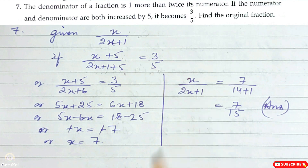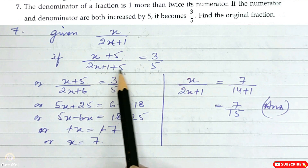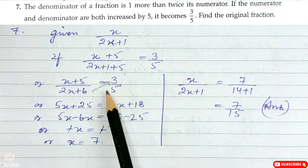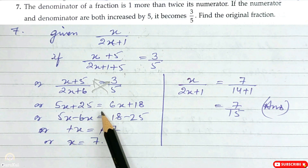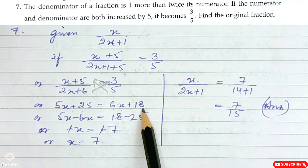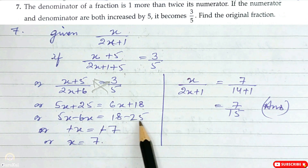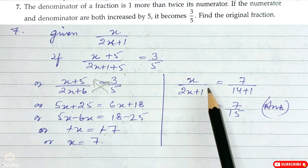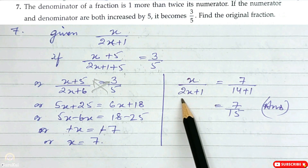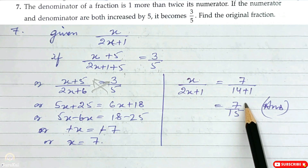We have the equation: (x plus 5) over (2x plus 6) is equal to 3/5. Cross multiply: 5(x plus 5) is equal to 3(2x plus 6), so 5x plus 25 is equal to 6x plus 18. Bringing x to the left: 5x minus 6x gives minus x, and 18 minus 25 is minus 7; both negatives cancel, so x is 7. The original fraction was x over (2x plus 1) = 7 over 15.